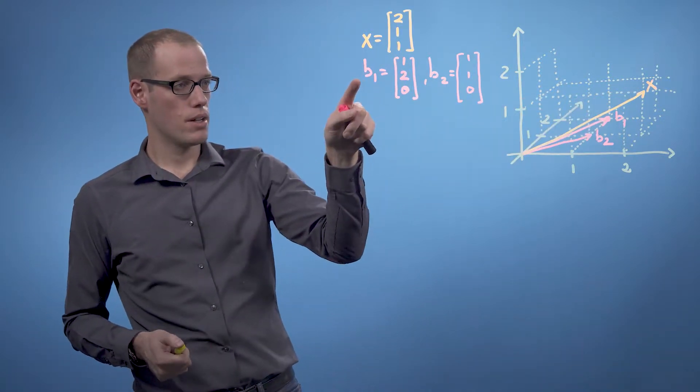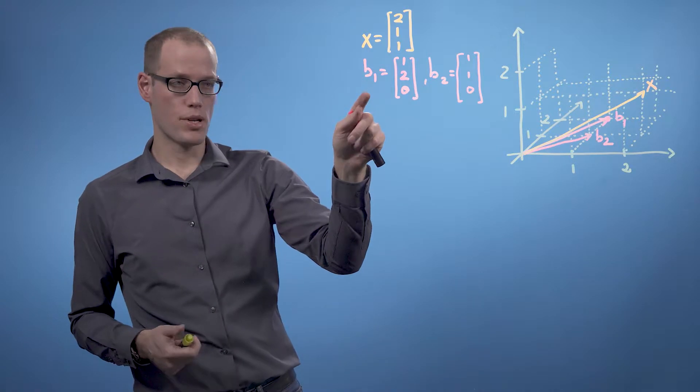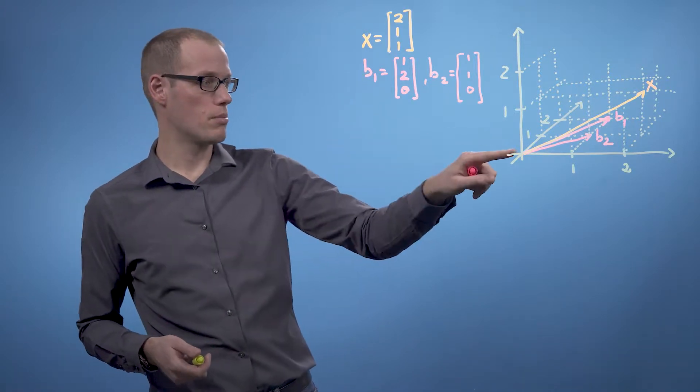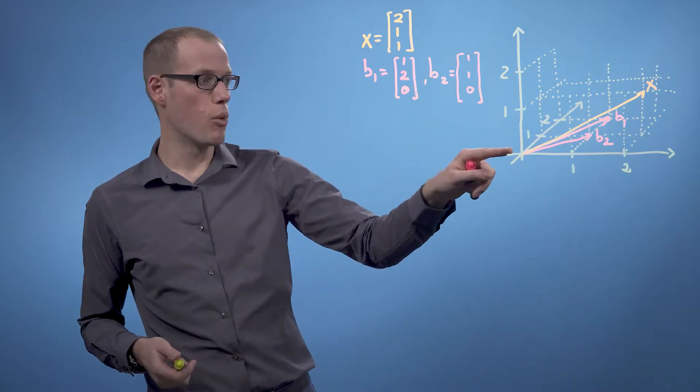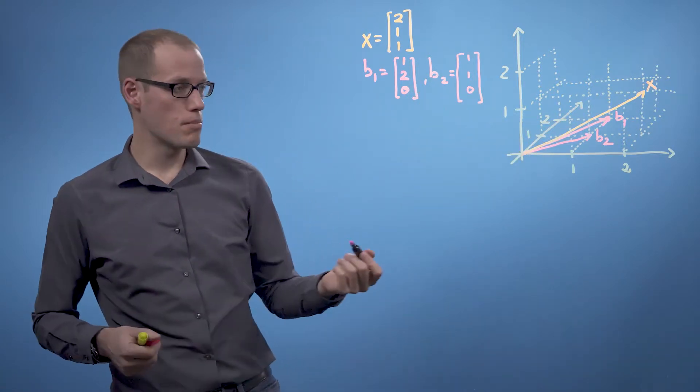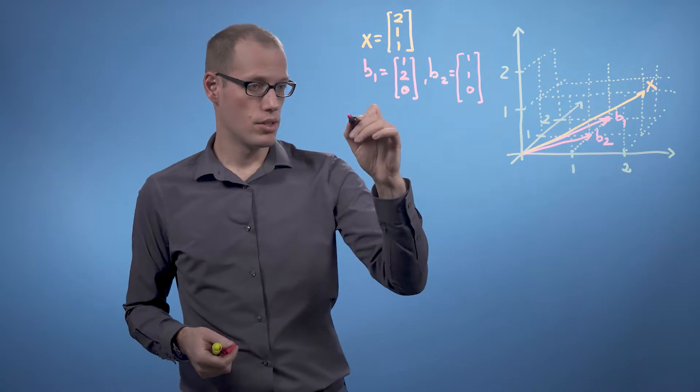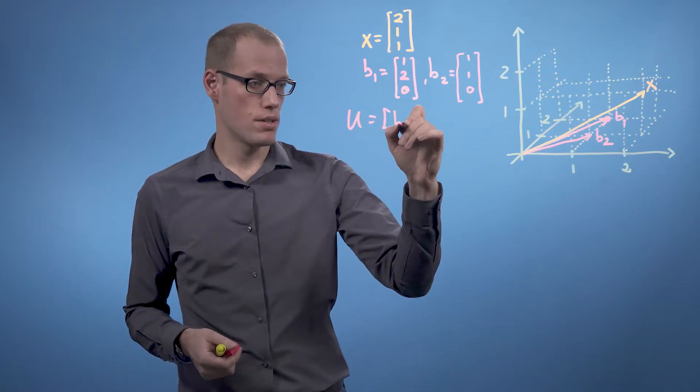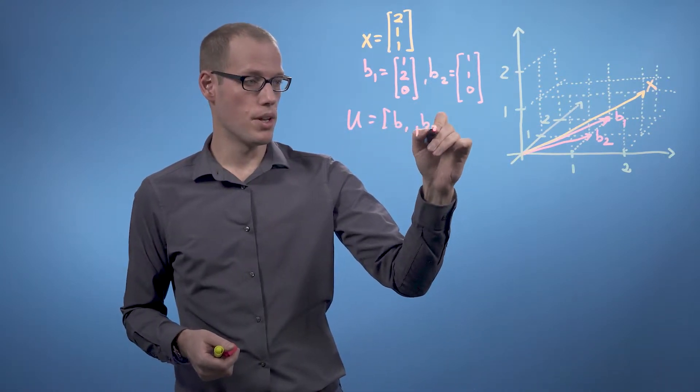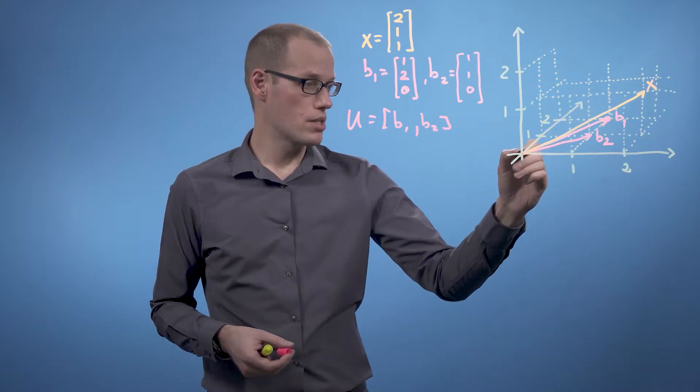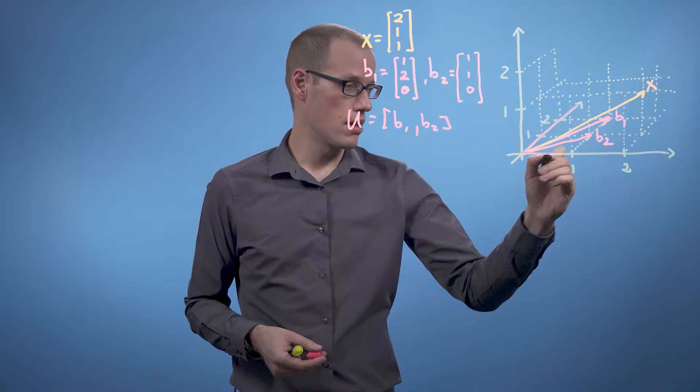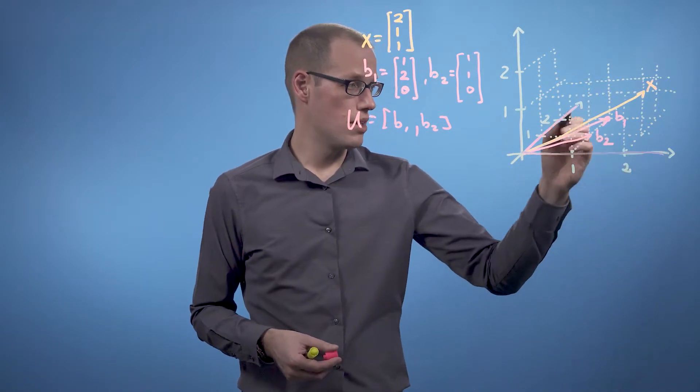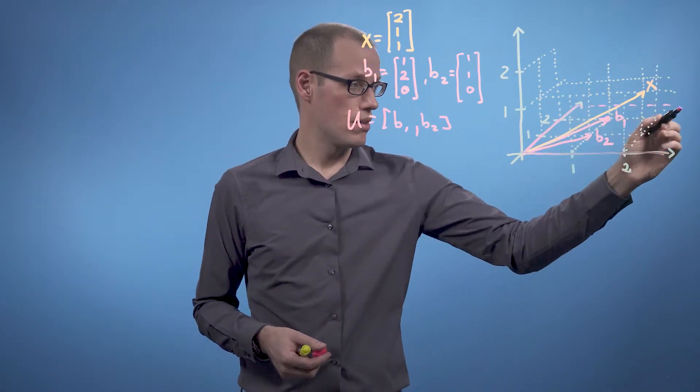And we define two basis vectors for our two-dimensional subspace: b1 to be 1, 2, 0, and b2 to be 1, 1, 0. So that means u, which is spanned by b1 and b2, is going to be effectively the plane and its extension. So this all is u.